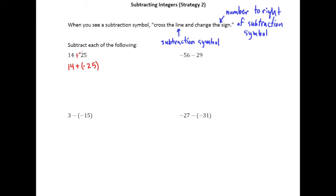Cross the line, change the sign. And then 14 plus negative 25, we know how to deal with that. We will subtract. And of course our answer ends up being negative 11.